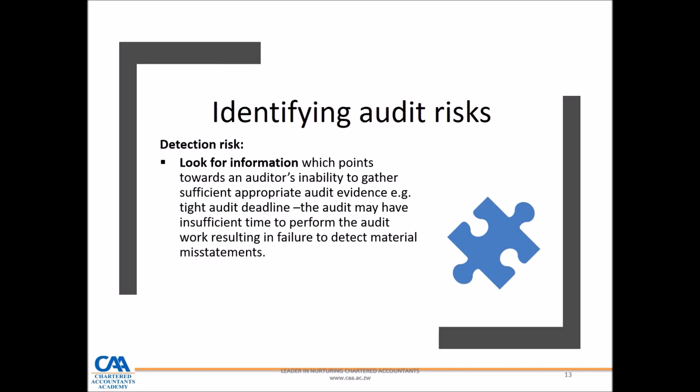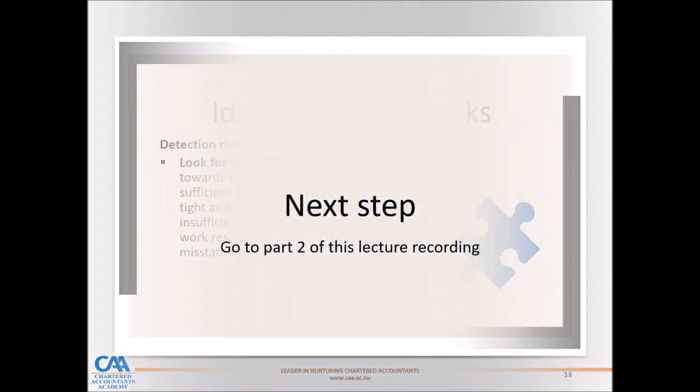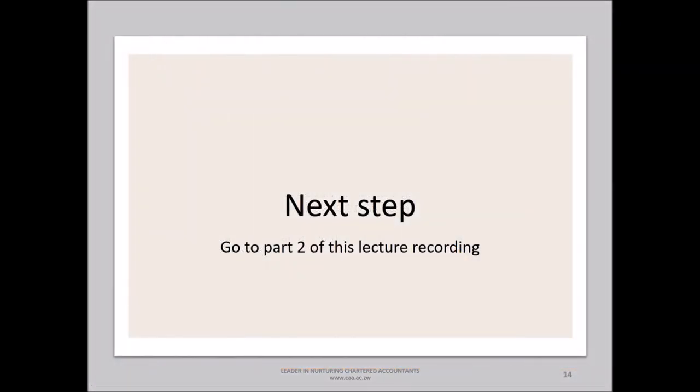This may result in the auditor failing to gather sufficient appropriate audit evidence. In summary, when identifying audit risk, the most important aspect is being able to pick out the trigger from the case study. Do not create your own triggers — read and understand the case study, pick out any risk triggers, and from those triggers identify the risk arising. That is it for part one of our lecture on risk assessment. In part two, we will look at how to describe audit risk and how to differentiate between risk at overall financial statement level and risk at assertion level.